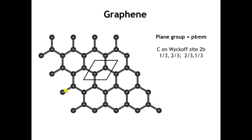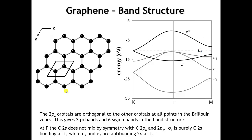Everything set up so far is generic for any crystal with a two-dimensional hexagonal lattice. Graphene specifically is a two-dimensional honeycomb — or chicken wire — of fused benzene rings. The unit cell contains two carbon atoms on the Wyckoff site 2b of plane group P6MM. The relevant atomic orbitals on carbon are the 2s, 2px, 2py, and 2pz. With two carbon atoms per unit cell, the entire band structure has eight bands.